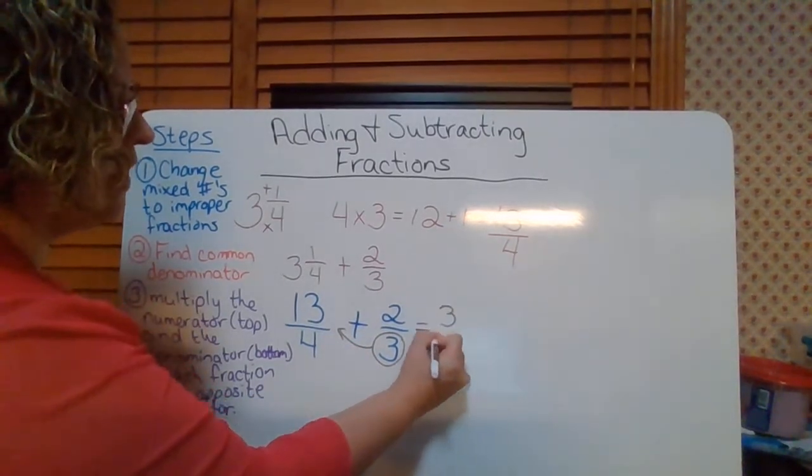Step five: add your numerators and keep the denominator the same. So you add the numerators and keep the denominator the same. So 39 plus eight is 47, and I keep the denominator the same, which is 12.